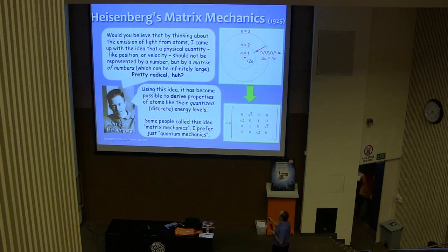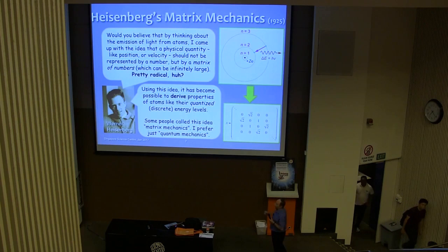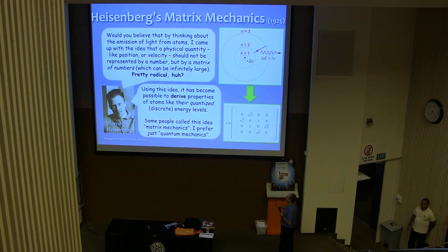It's still pretty unclear, but the important point for Heisenberg is that using this idea, using this substitution for using a big matrix like this for a physical quantity like the position of an electron, it was possible to derive properties of atoms. So not just to assume that atoms had these energy levels, he could actually derive it all from first principles by making this apparently crazy assumption. So some people call this idea matrix mechanics because it was all based on matrices like this, but I prefer just quantum mechanics. So the quantum comes from the fact that it leads to quantized energy levels, which just means you have discrete energy levels.